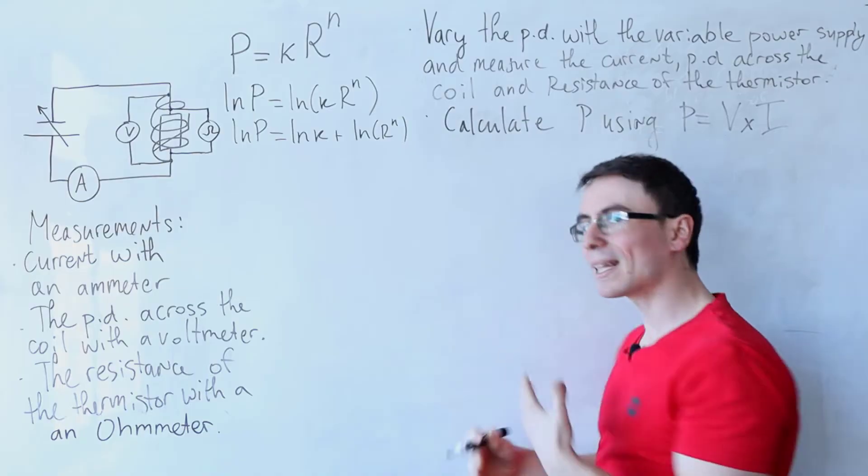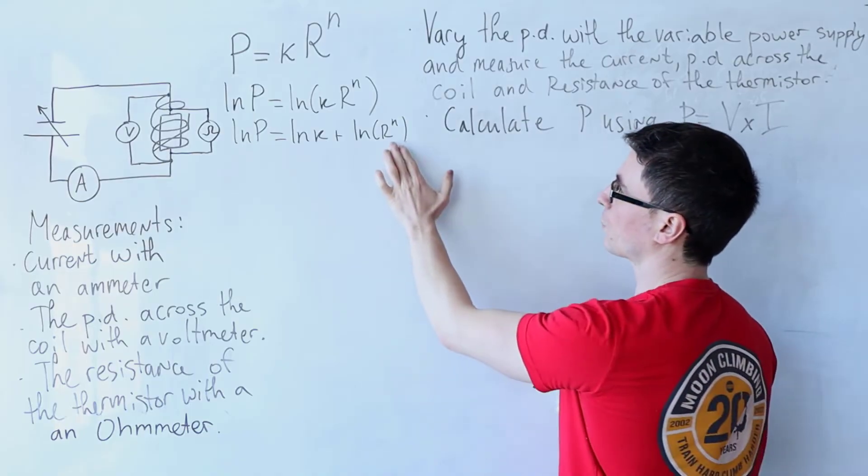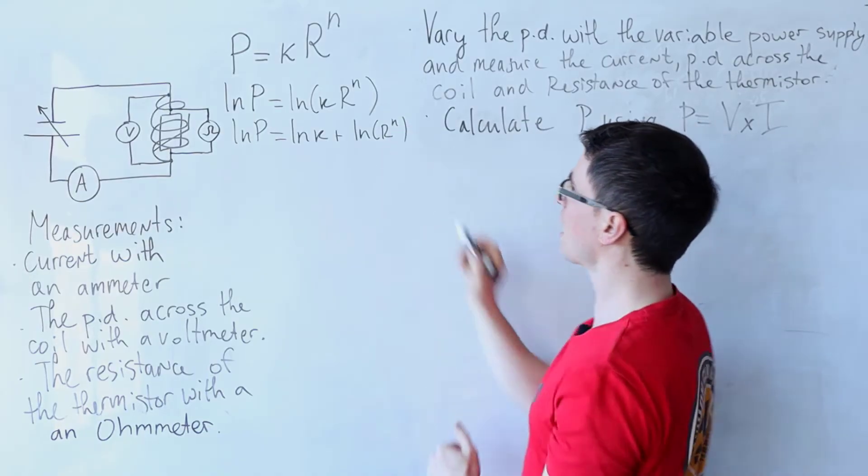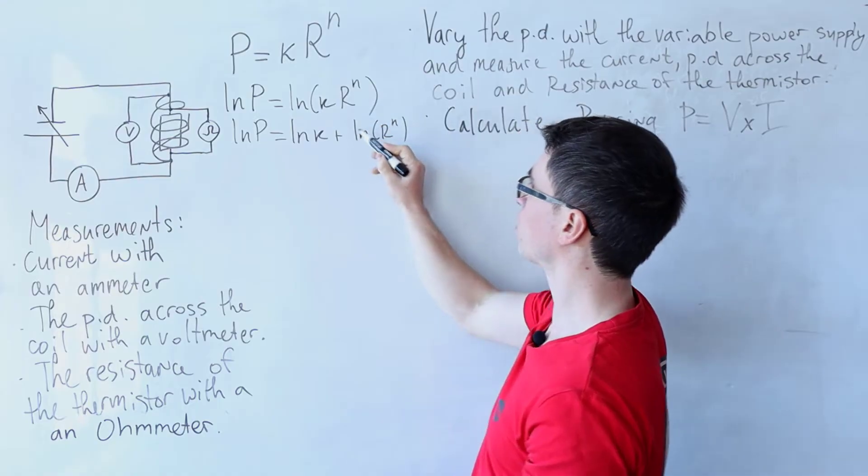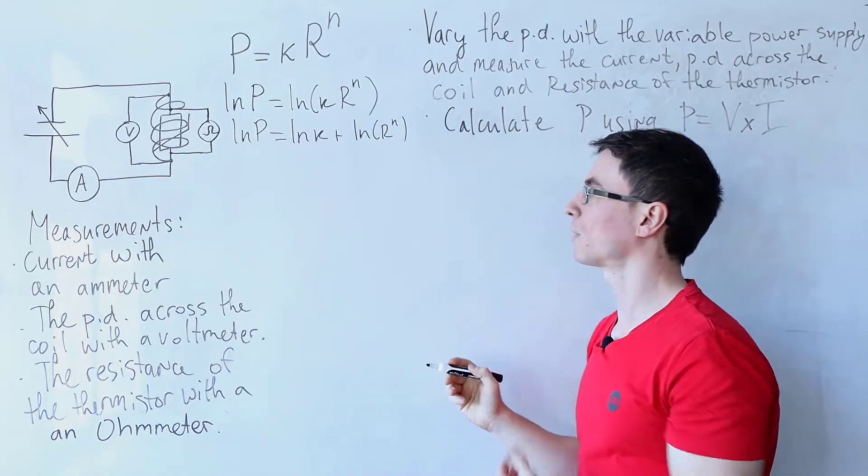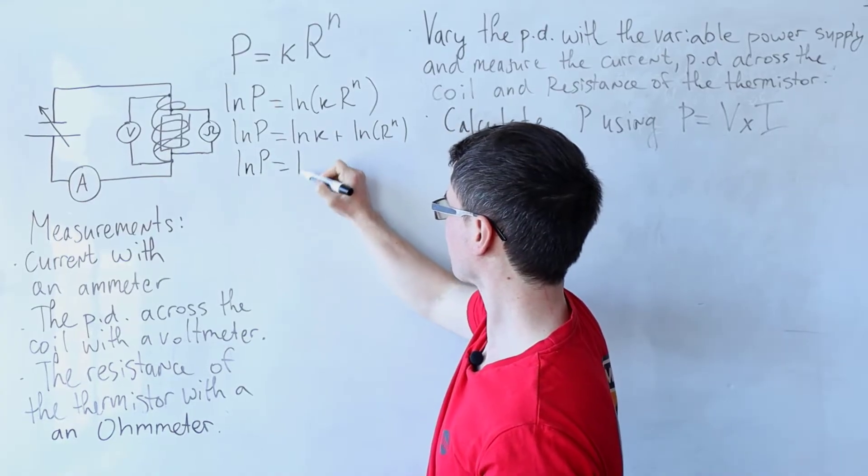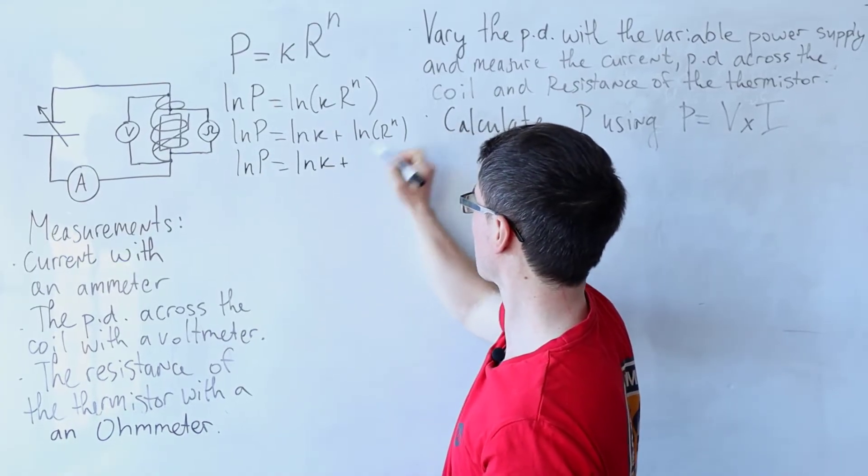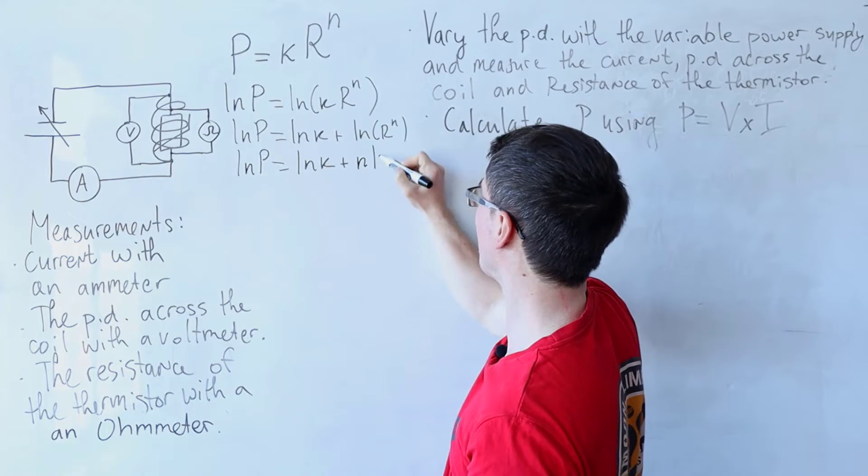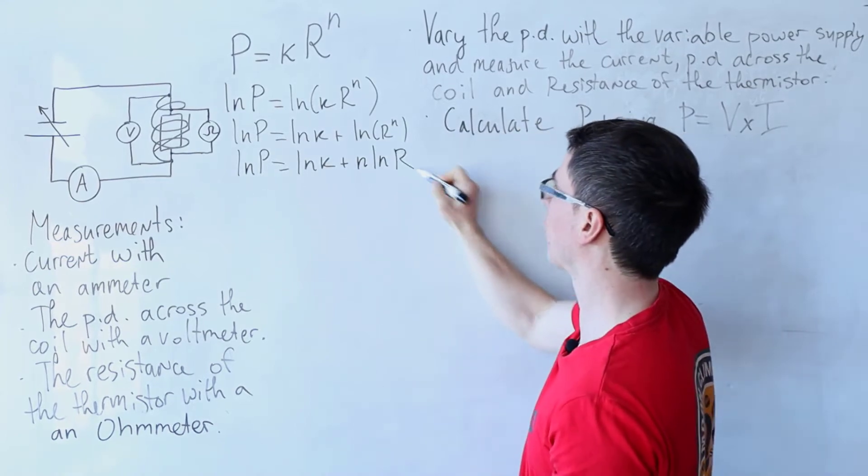And I'm going to use yet another rule for logs that if something is raised to the power of n, I can bring this power to multiply outside of the log. So what we get is ln of P is equal to ln of k plus n ln of R.